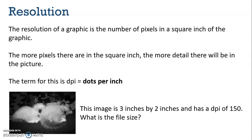We're going to talk about resolution now. Resolution is basically the number of pixels in a square inch of the graphic. We've talked about resolution before as relating to how blurry an image is, and we're going to look at the more technical aspects of it. The more pixels there are in a square inch, the more detailed the picture will be, and the term we use for this is DPI, which stands for dots per inch — referring to how many pixels are in a square inch of a graphic.